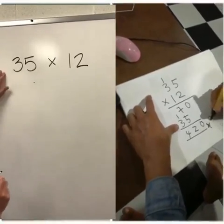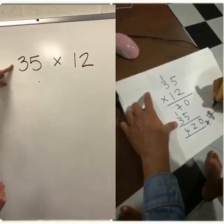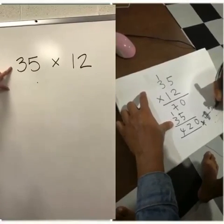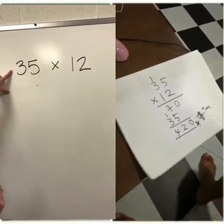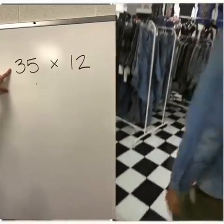First thing is we have our multiplication problem 35 times 12. The first thing we need to do after that is expand these two numbers. We need to break it down into its tens and its ones.